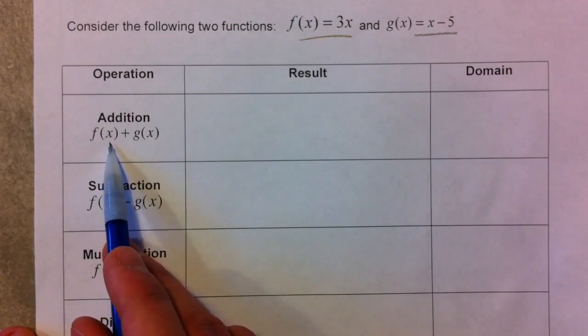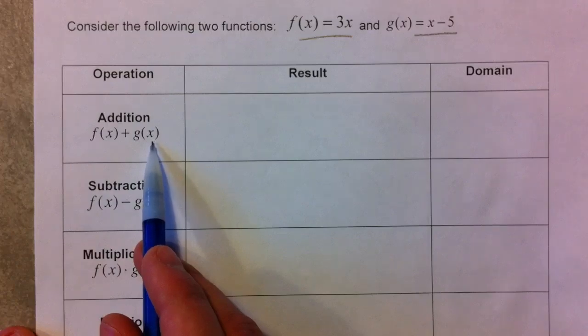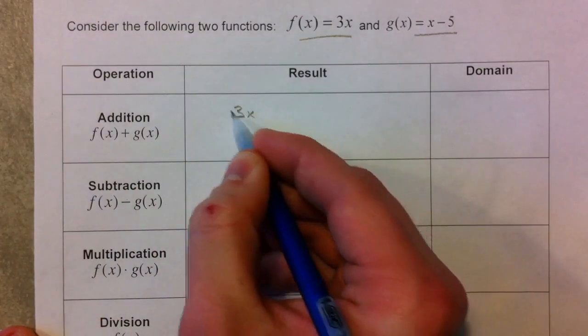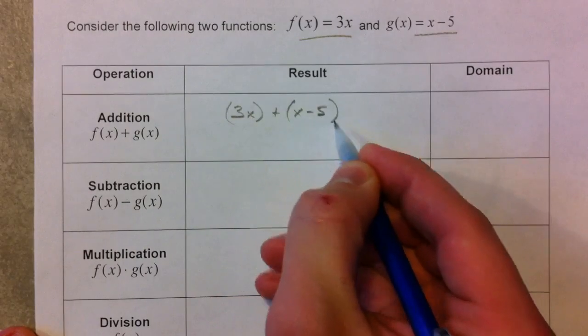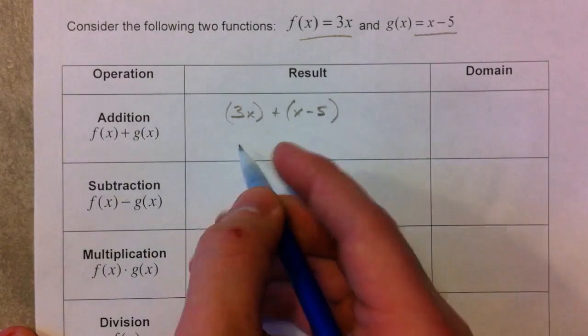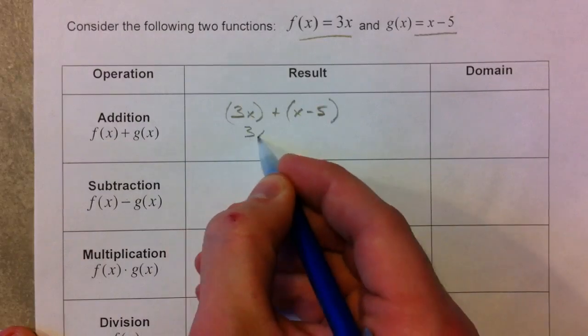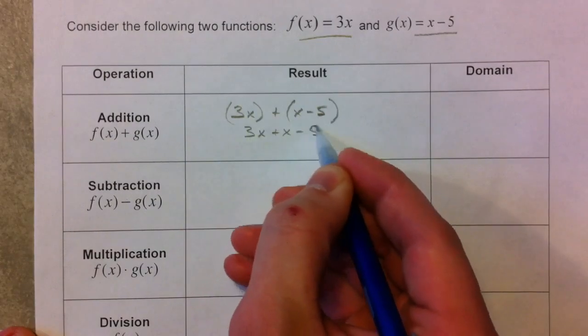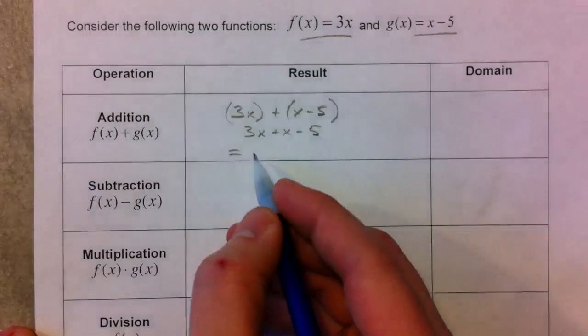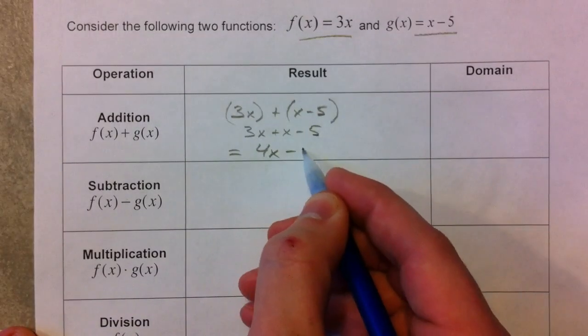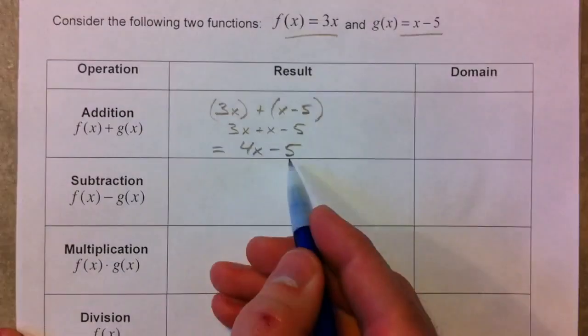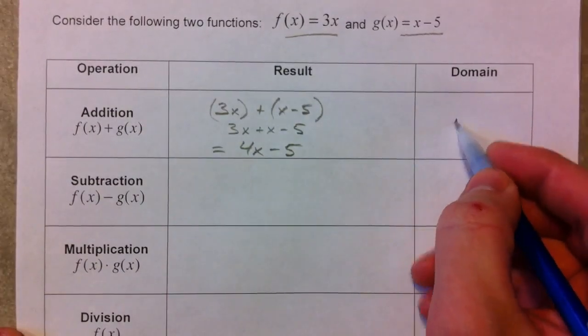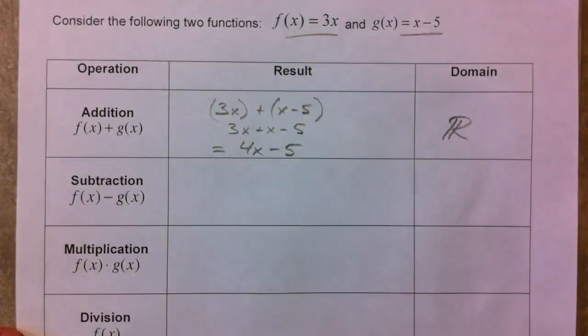And so all we're going to have to notice is that given that f of x is 3x, and g of x is x minus 5, and so those are just names of functions. It's like Fred and George. And so this is shorthand for saying add the 3x plus the x minus 5, and so really what it's saying is take 3x plus x minus 5, and we get 3x plus x minus 5. We combine some like terms, and we get 4x minus 5. The domain of this one, this is a linear function, and so the domain of this one is going to be all real numbers.